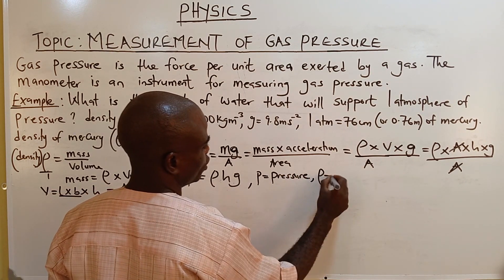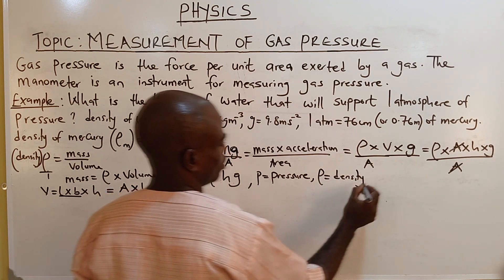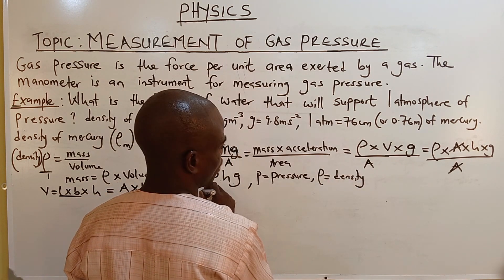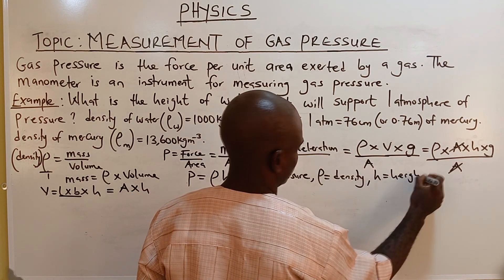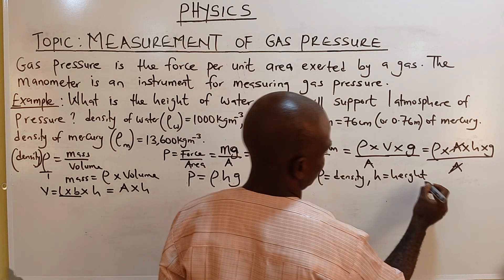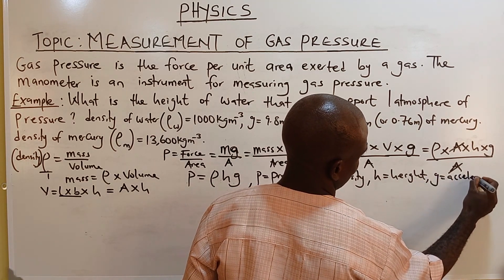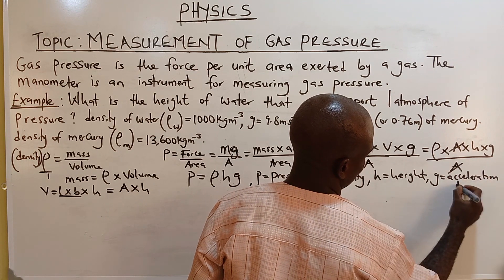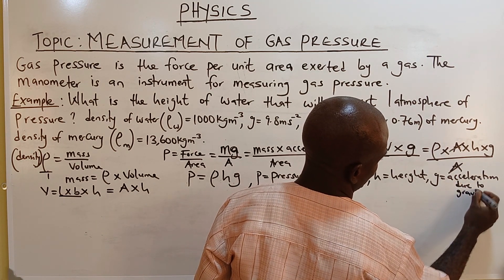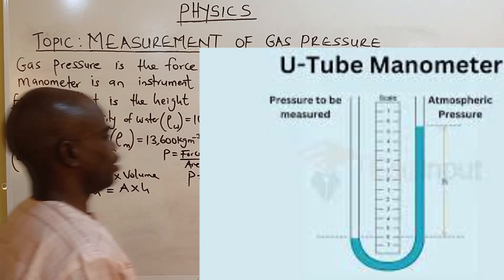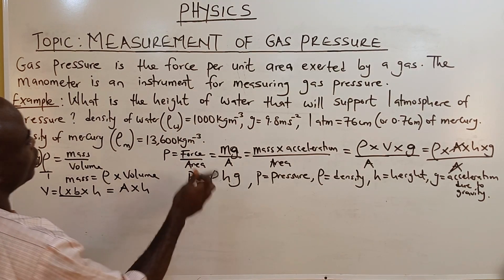Rho stands for density. H stands for height. And G stands for acceleration due to gravity.